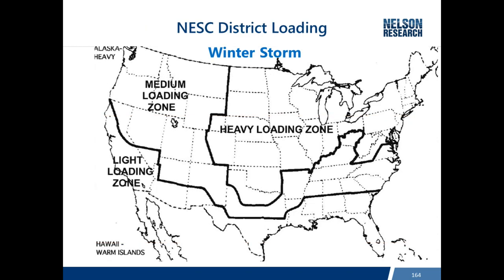This is the district load map, representing a winter storm scenario with light, medium, and heavy loading districts. Those names came from a railroad ice map based on the severity of ice in different regions. It turns out that light loading can sometimes create a heavier or increased load compared to the medium loading district.